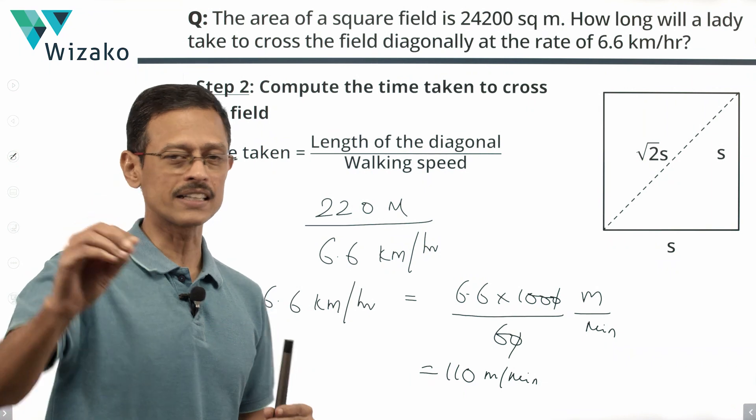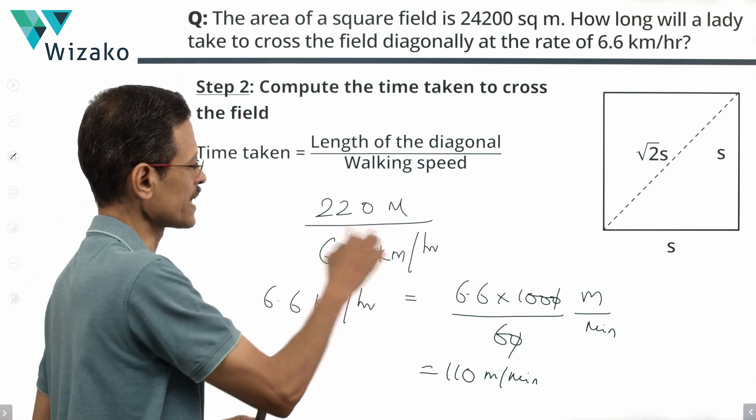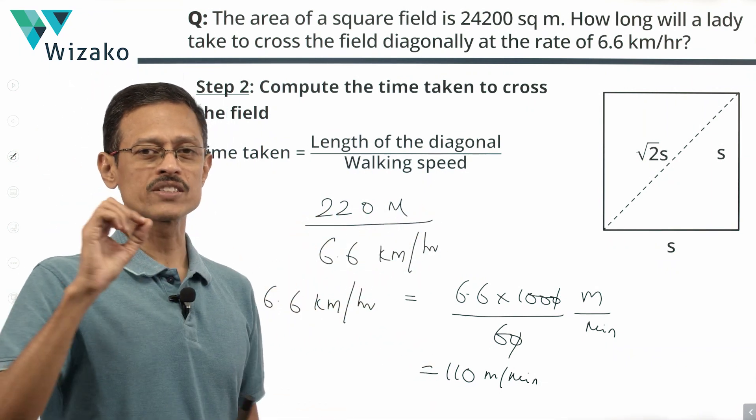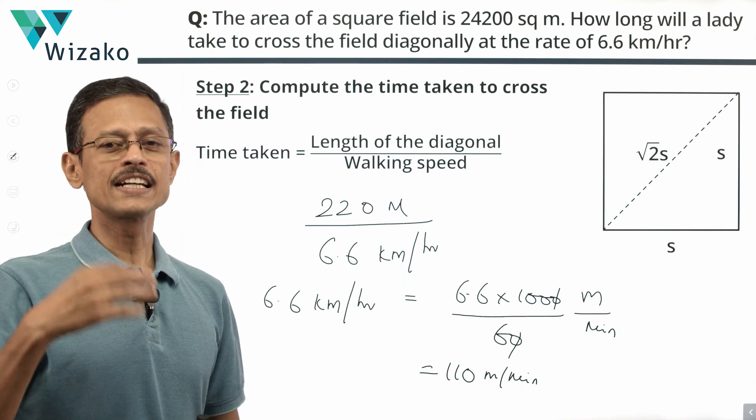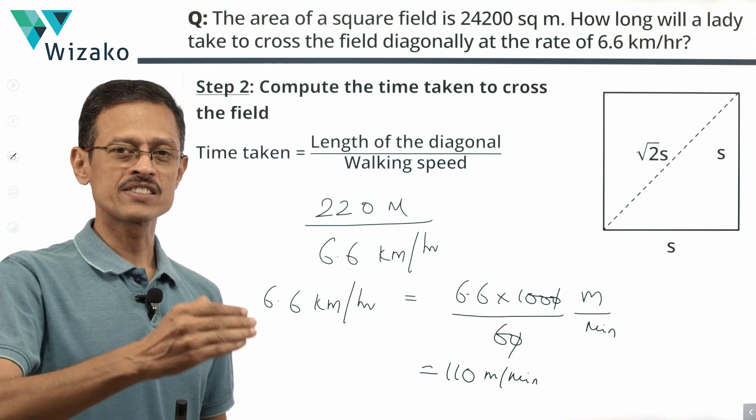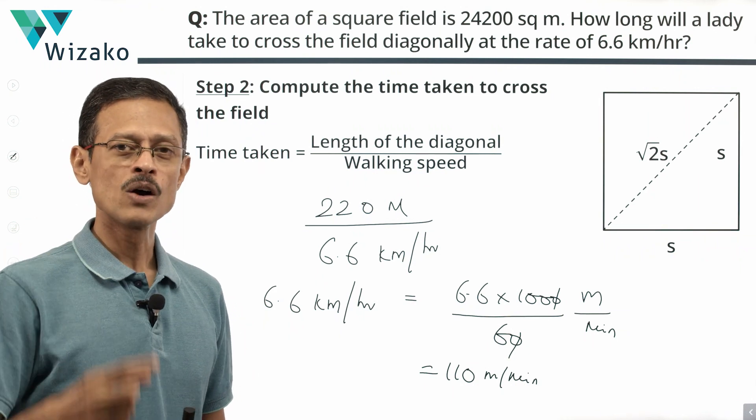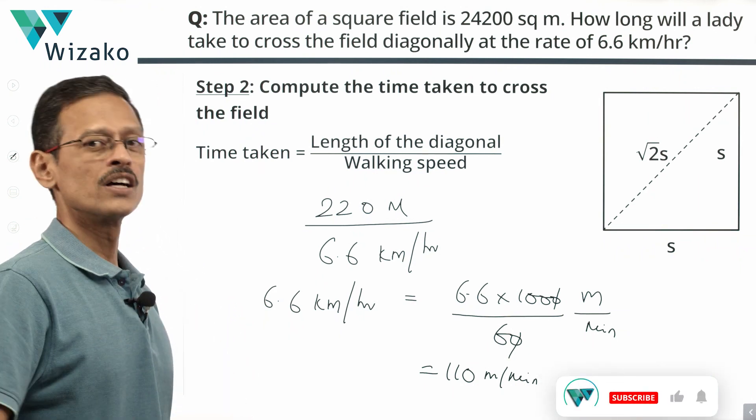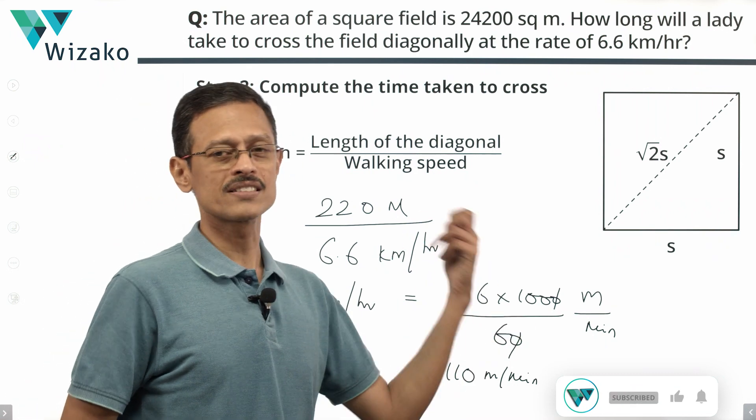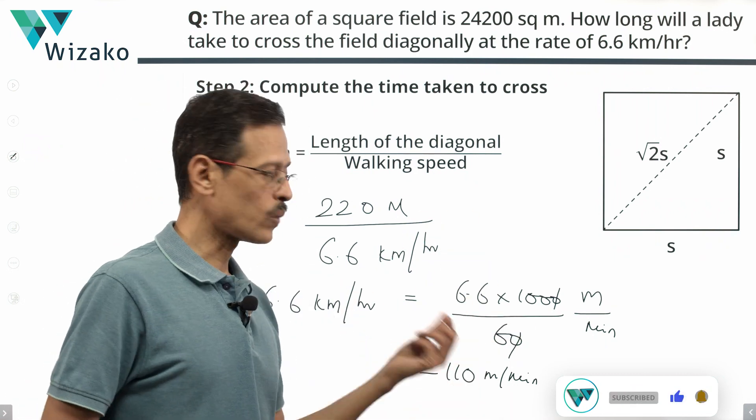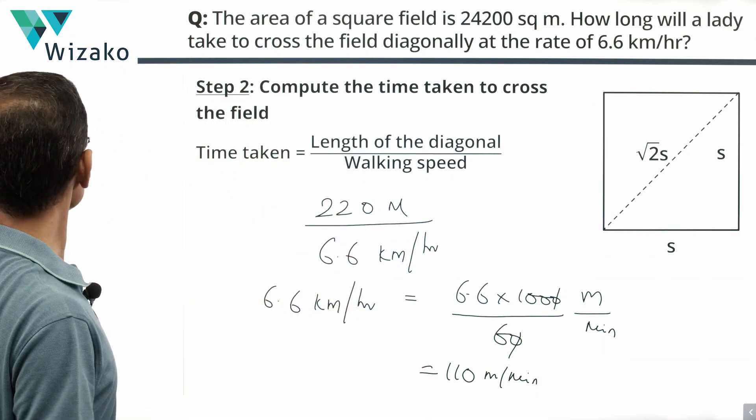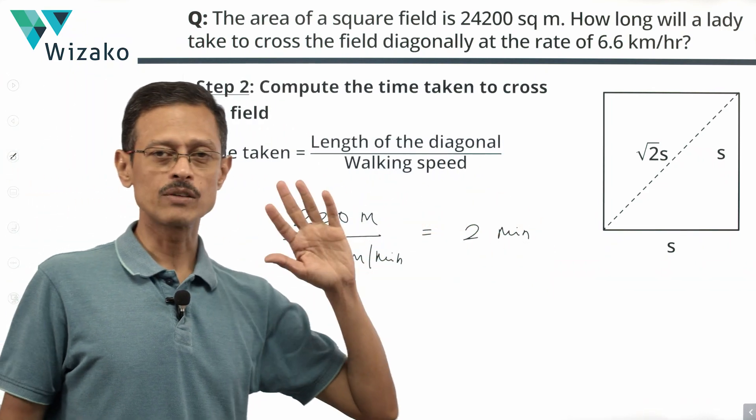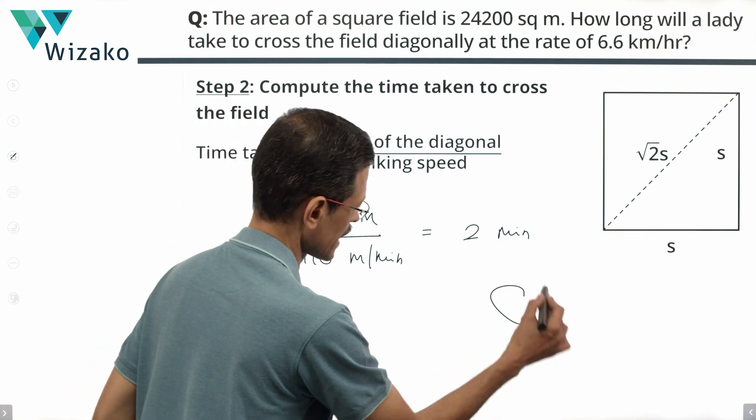We started by saying that the time taken is distance traveled divided by speed. We didn't do any conversion of unit initially. We just plugged in the values writing the unit by the side. 220 meters divided by 6.6 kilometers per hour. Then we converted the 6.6 kilometers per hour into meters per minute. 6.6 kilometers became 6,600 meters. One hour became 60 minutes. So it's 6,600 upon 60 meters per minute which is 110 meters per minute. With speed in meters per minute and distance in meters, we have the time taken equal to 2 minutes. Choice C is the correct answer.